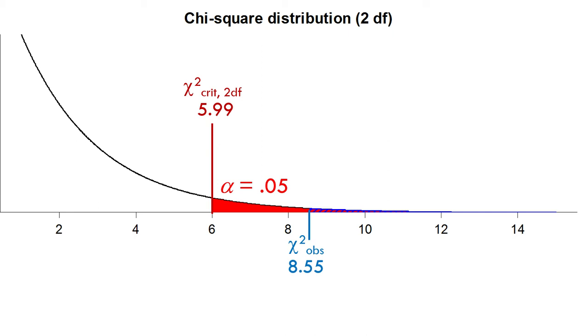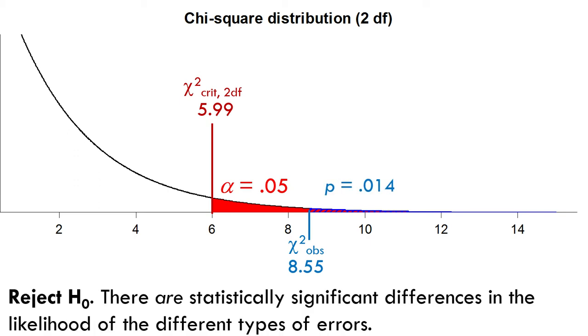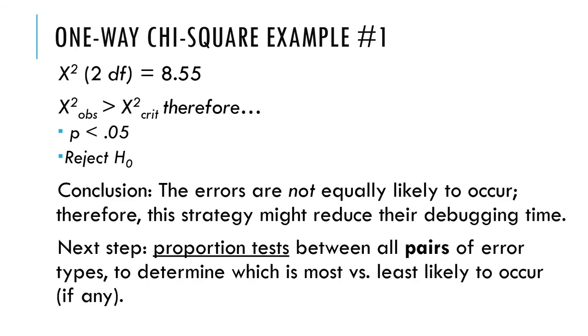We reject the null hypothesis. There are statistically significant differences in the likelihood of the different types of errors, and so that will help those programmers debug their code. Now they can look in whatever area it was that generated the pointer dereferences. The next step would probably be to perform proportion tests between pairs of error types to determine which is the most versus the least likely to occur. It's very similar to post-hoc tests after you do an ANOVA, a one-way ANOVA. You would do a proportion test, break this up into groups of two, two at a time.